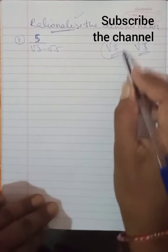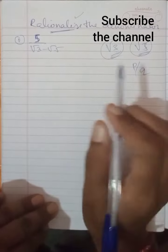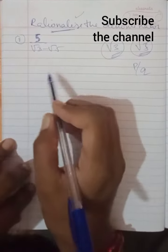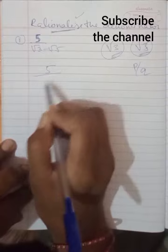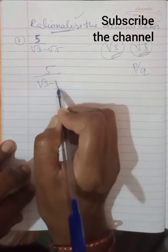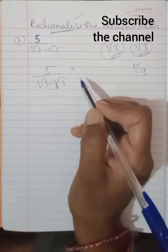Rational means p by q form, but I will not discuss more about that. Now look at this problem: 5 upon root 3 minus root 5. What I am doing here is very simple, as you know.